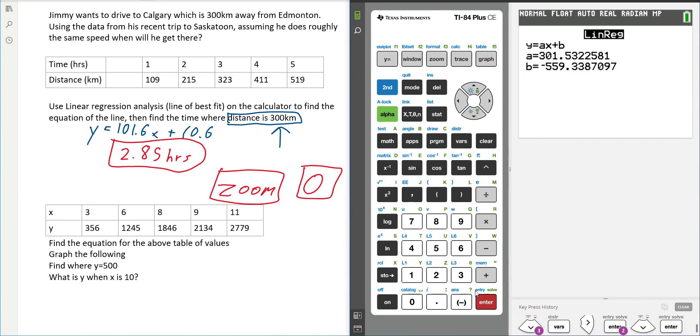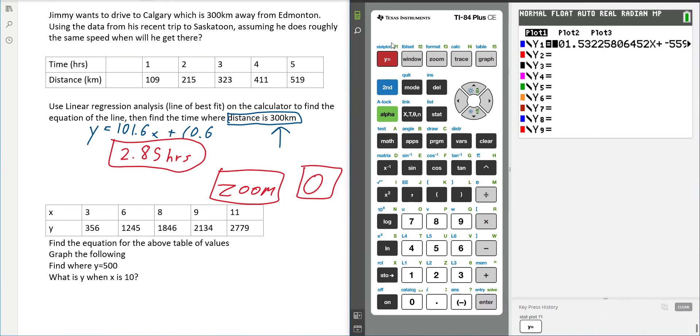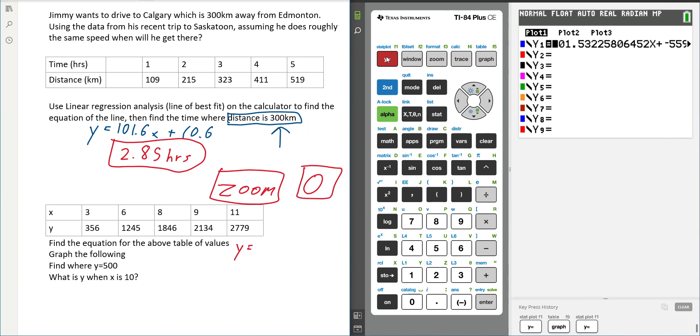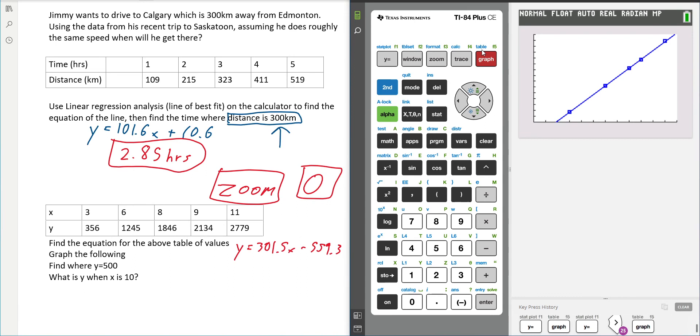And here it gives us our function. Here it also puts our function. And here it graphs our function. So if you're not sure what the function is, it's y equals 301.5, and we'll just leave it there, minus 559.3. We'll leave it there. Okay, it's close enough.